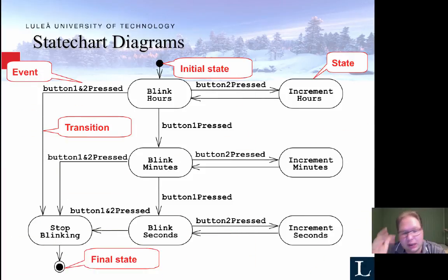So we have the initial state, which is a filled circle. Final state with the filled circle with an empty circle around it. You have the states, you have the events and the transition lines.